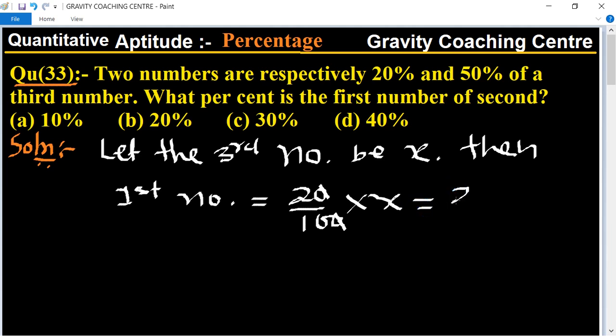So 2x upon 10. And the second number equal to 50%, which is 50 upon 100 into x. Zero zero cancel...